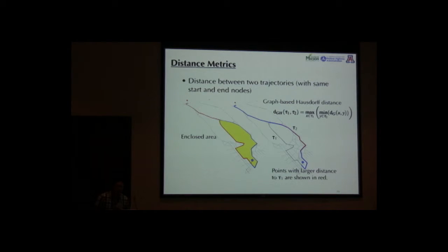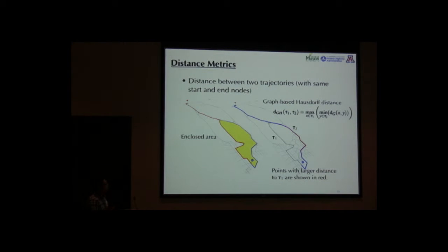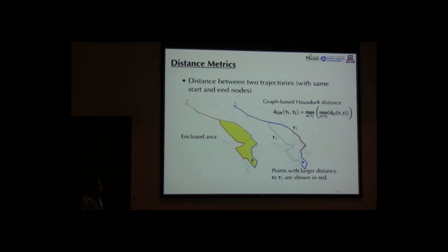We define two metrics to compute the distance. One is the enclosed area: consider two different paths from a node to a destination — even though the traveling distance is very similar, they can enclose a very large area, so we can say they are very different. Another metric is the graph-based Hausdorff distance. Given two paths tau 1 and tau 2, the points in tau 2 with the larger distance will be shown in red, indicating the region of difference.